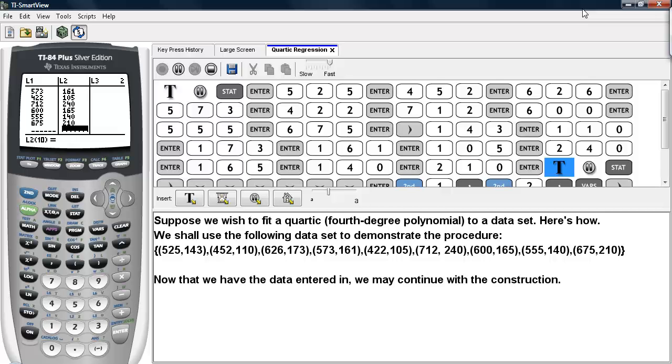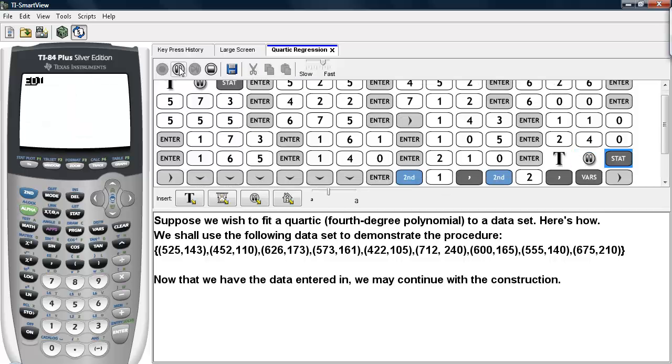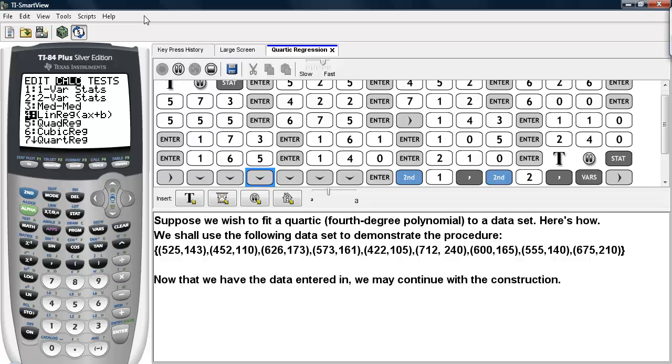we may continue with the construction of the fourth-degree polynomial. So we'll hit STAT, we'll go under CALC, and we'll select QUARTREG. This is quartic regression. And that is what fits a fourth-degree polynomial to our data set. And this is the highest degree polynomial that the calculator can use.